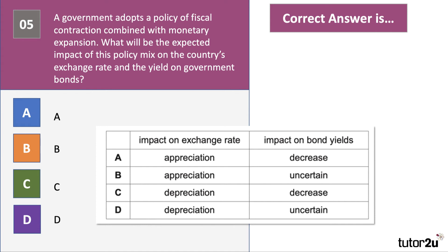Question five: fiscal contraction suggests the government will be spending less, taxing more, or borrowing less — trying to bring down their budget deficit. Monetary expansion implies lower interest rates and therefore a depreciation of the exchange rate, because if interest rates come down or there's an increase in quantitative easing, you'd expect a depreciation of the exchange rate — perhaps via an outflow of hot money. So it's going to be C or D.